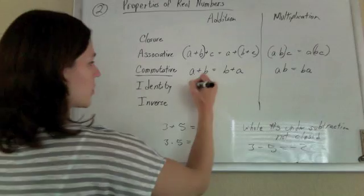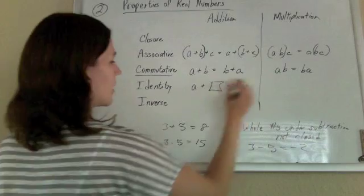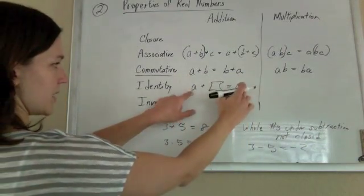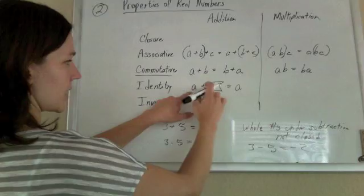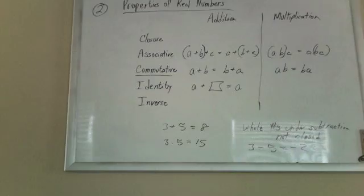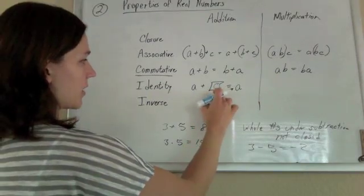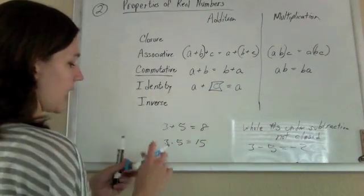Identity is the element you have to add so that an element maintains its identity. If you want A plus something to go back to A, our identity element is going to be 0. Because we know if we add 0 to anything, it will stay the same.